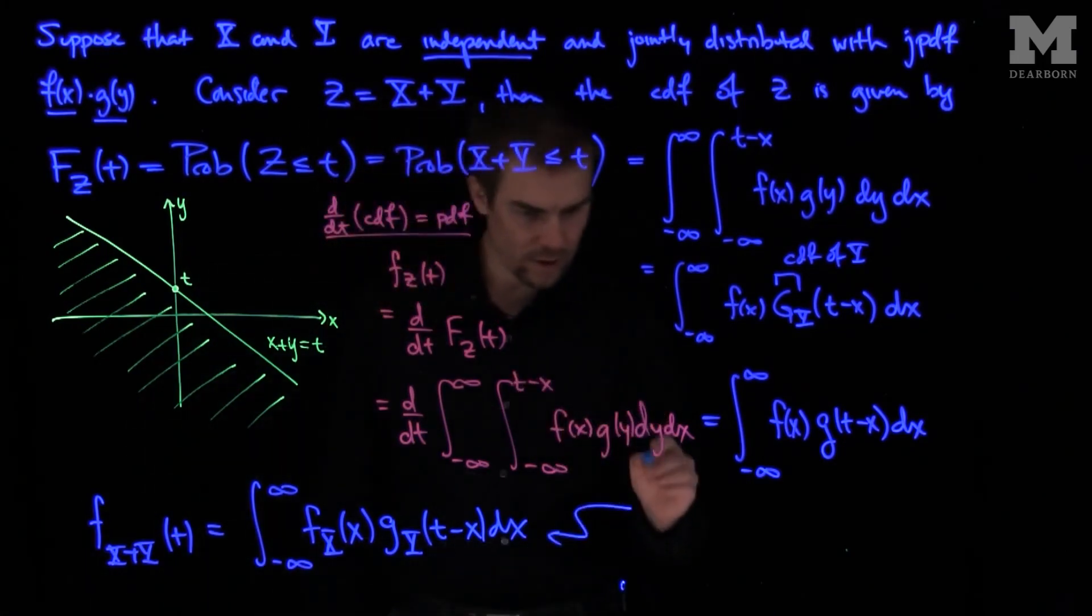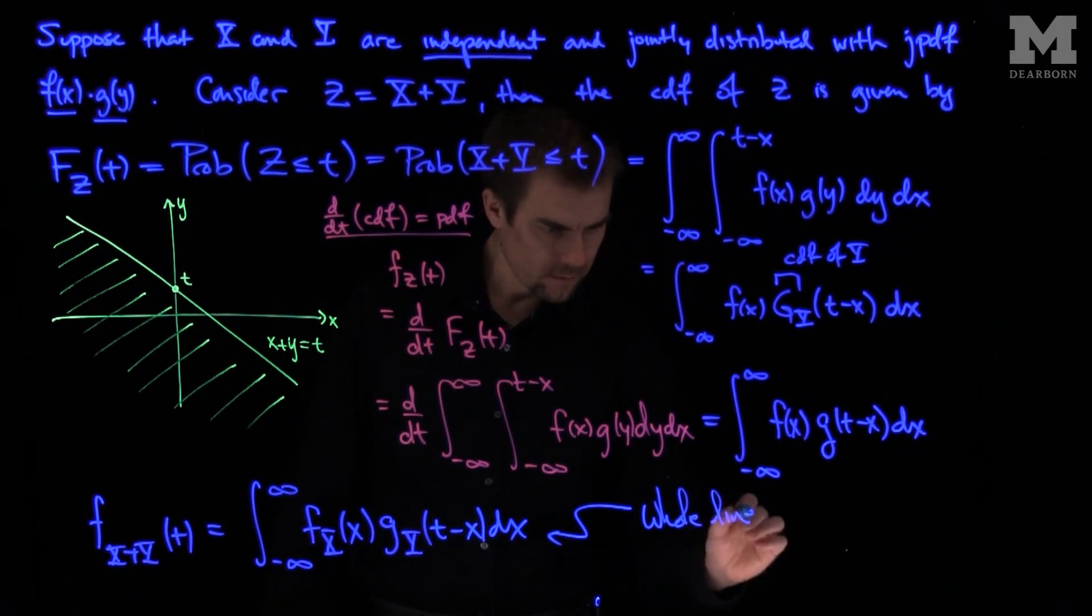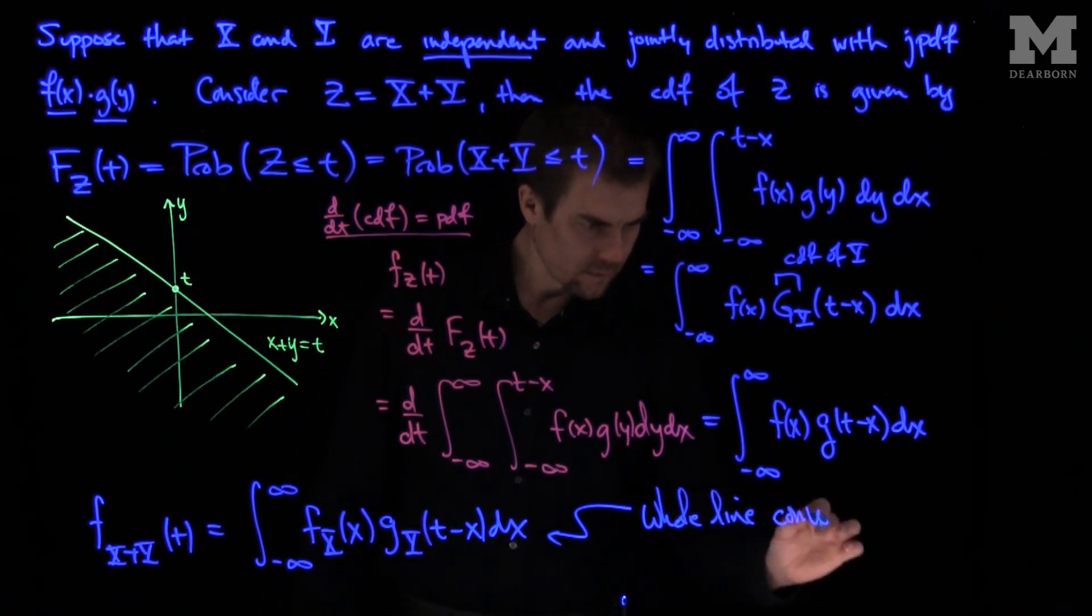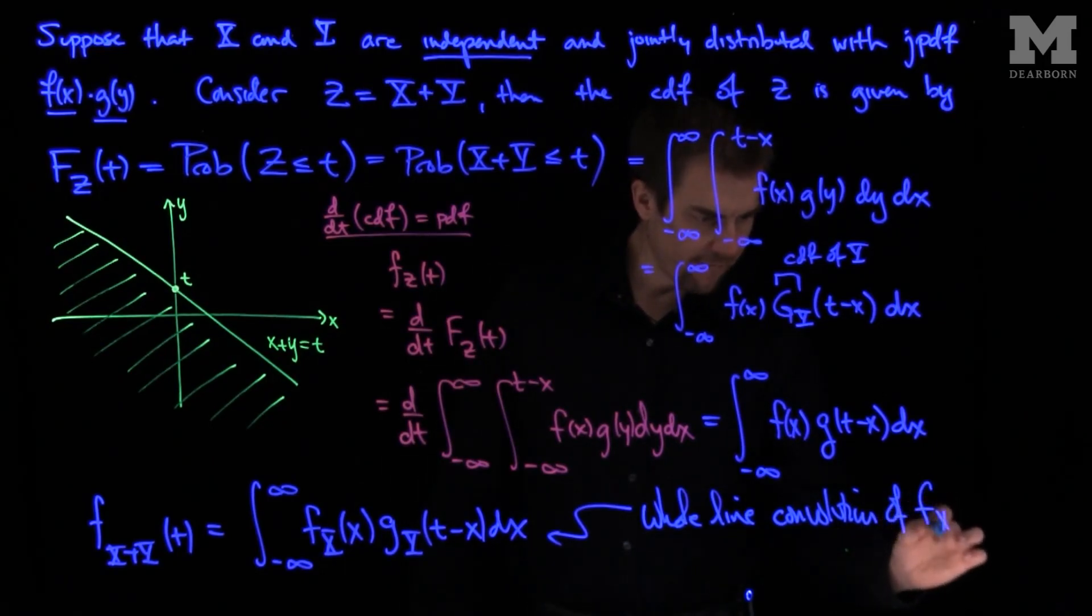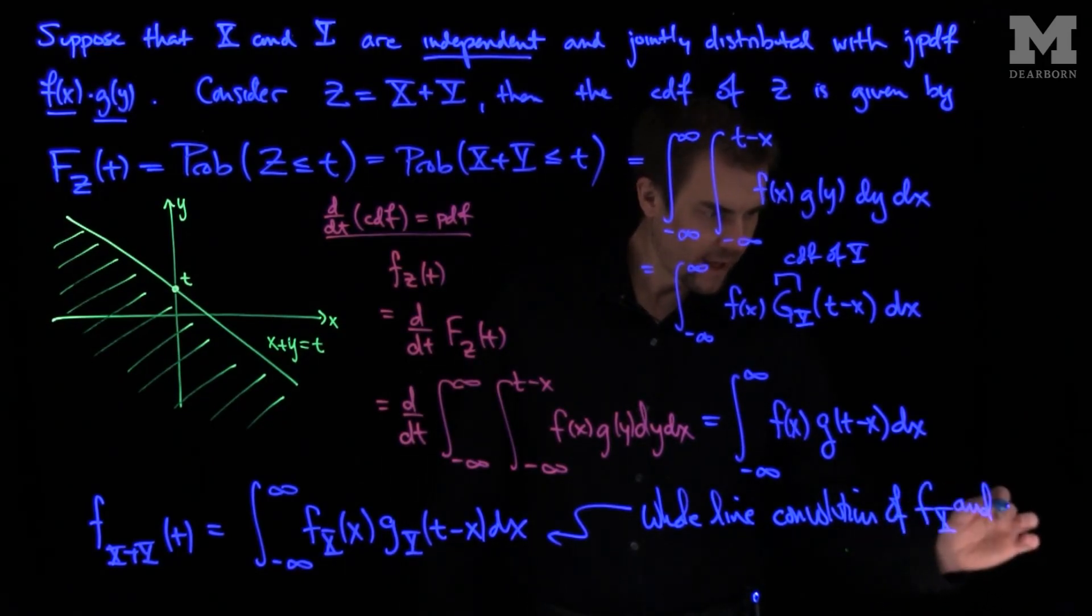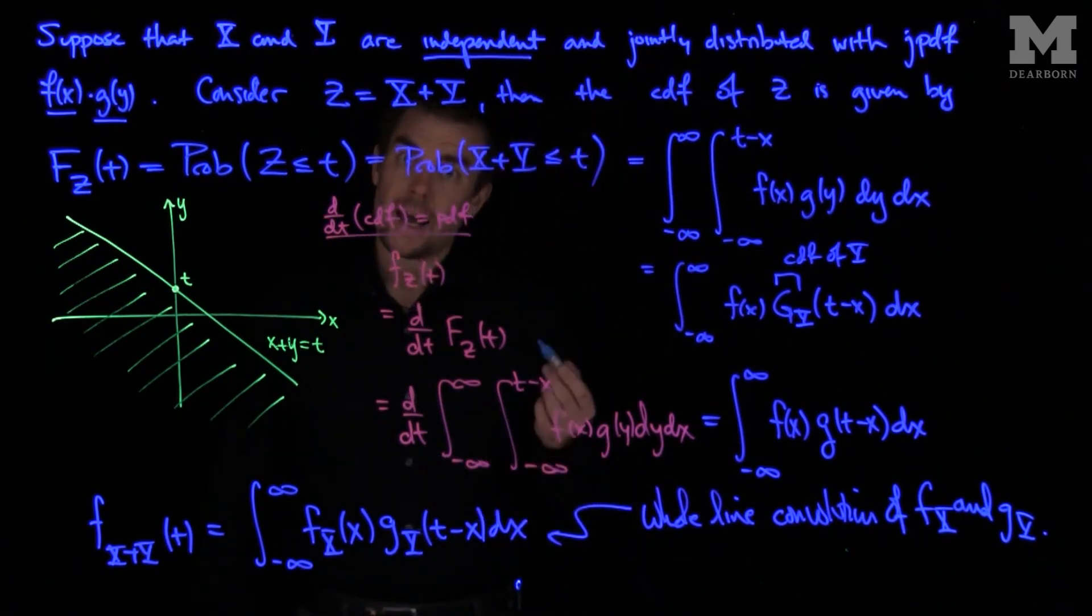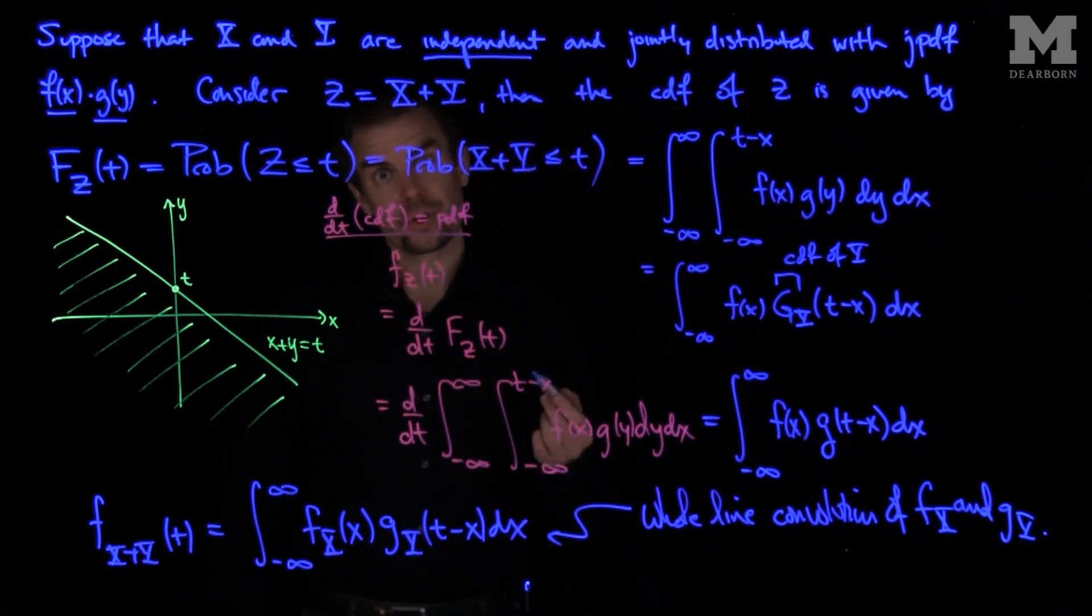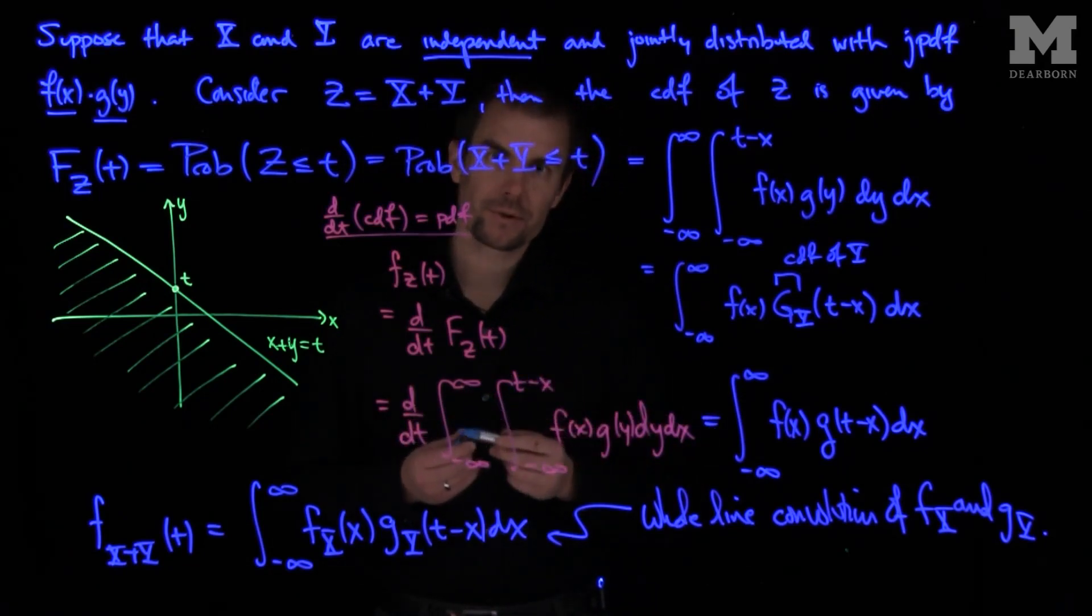And this expression over here is called the convolution of the pdfs f of x and g of y. In future videos we'll see examples of computing this convolution and finding formulas for the sum of two random variables.